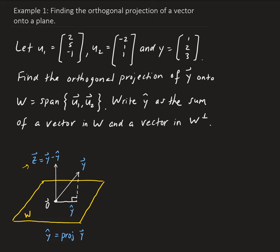In this example, we want to find the orthogonal projection of the vector y, given as [1, 2, 3], onto W, which is the span of u1 and u2.